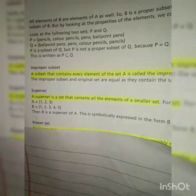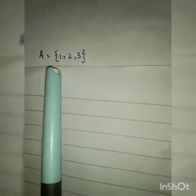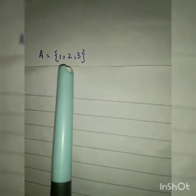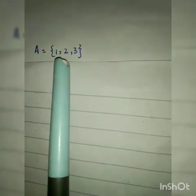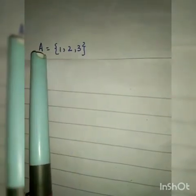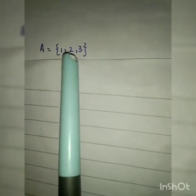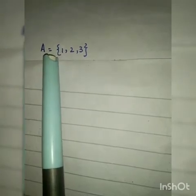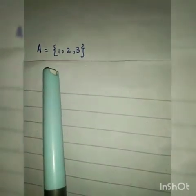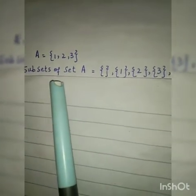Next ہمارے پاس power set ہے۔ Power set کے لئے یہ ایک set لکھا ہوا ہے - Set A = {1, 2, 3}۔ اب ہم نے اس کا power set لکھنا ہے۔ Power set کیا ہوتا ہے - ہم نے وہ تمام elements لکھنے ہوتے ہیں جو کہ اس set کے subset ہو سکتے ہیں۔ جتنے بھی اس set کے subsets ہیں وہ اس کا power set کہلائے گا۔ تو پہلے subsets mention کرتے ہیں۔